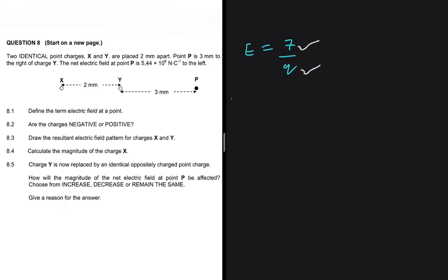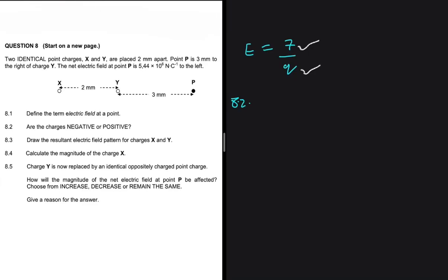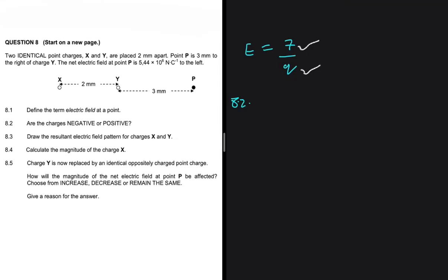Now let's move to question 8.2, which asks whether the charges are negative or positive. We have two identical point charges X and Y placed 2mm apart. Point P is 30mm to the right of charge Y. The net electric field at point P is 5.44 × 10⁶ N/C to the left.